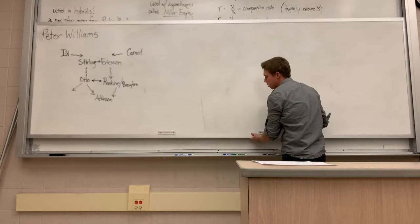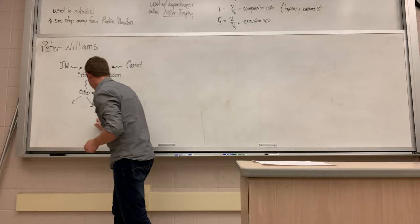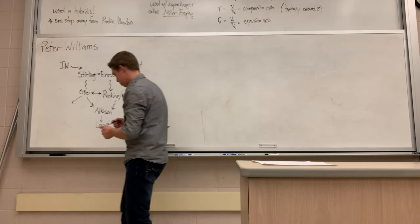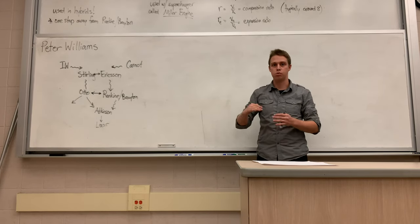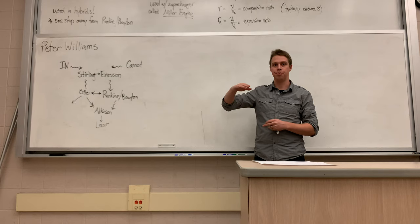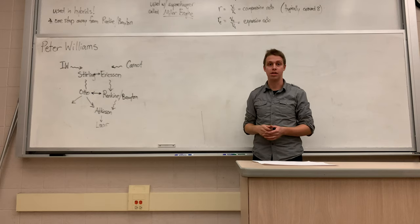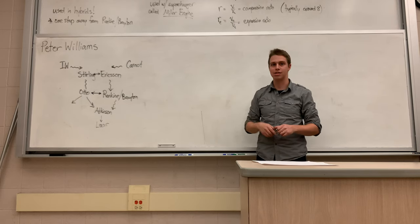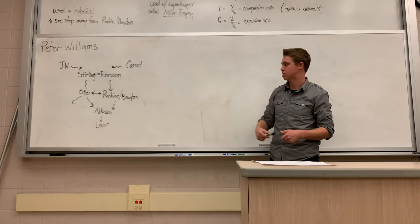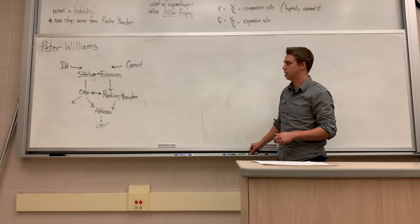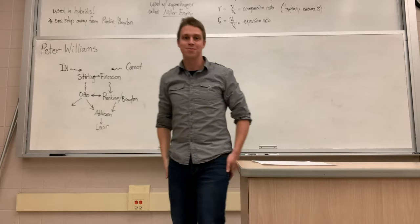To finish off: the Lenoir cycle is like the Atkinson cycle taken to its extreme — we keep shortening the intake stroke until we don't have an intake stroke anymore, leaving that simple three-sided shape. It's not very useful at that extreme, but it's interesting to study because it's quite simple. We'll see you back next time for our last video.